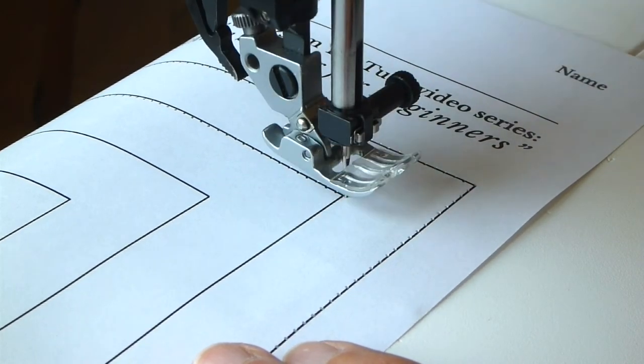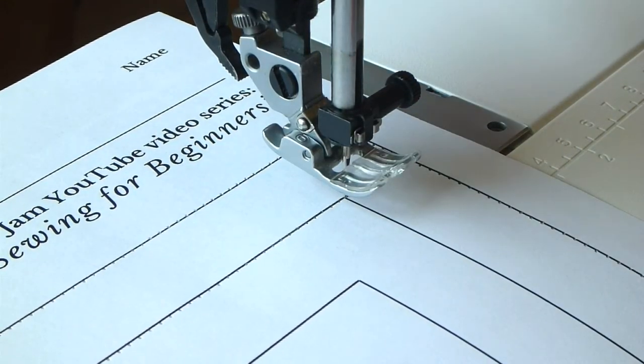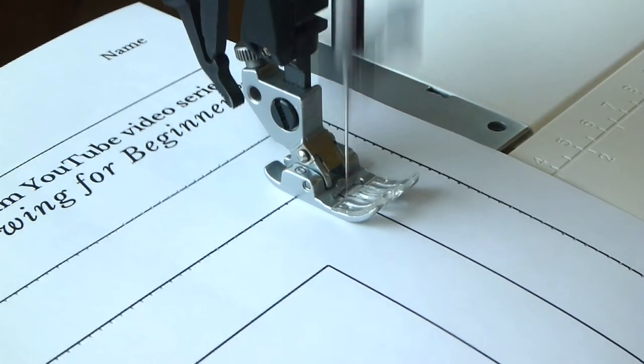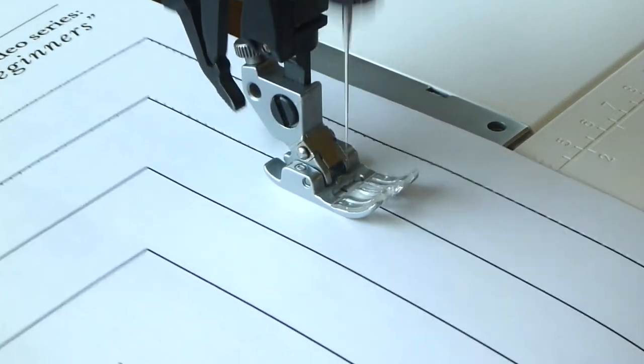Keep practicing until you are able to complete one sheet of proper pivot turns without overshooting the corners or moving the paper around with the needle out of the paper.